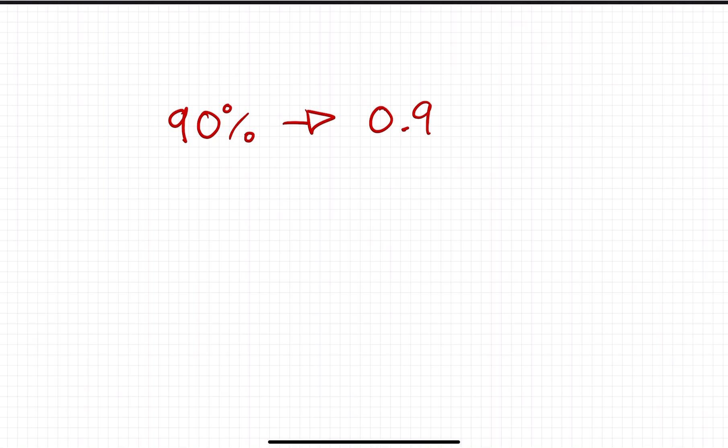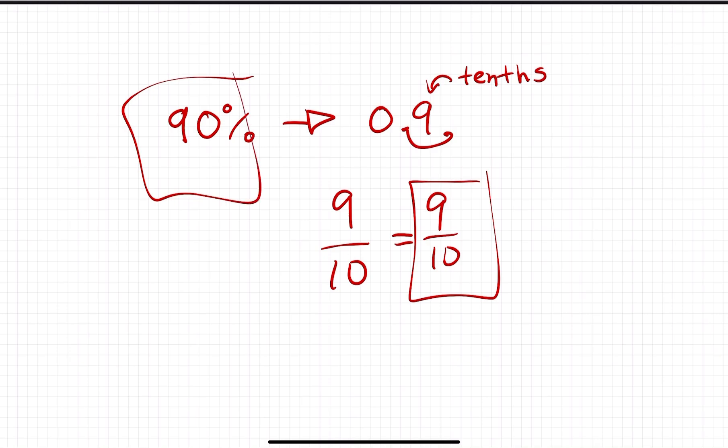90% written as a decimal is 0.9. To write it as a fraction, I see how many numbers I have after the decimal. Only one. This is the tenths place. So I take that 9 and put it over 10. This cannot be simplified further, so that's the most simple form. 90% is equivalent to 0.9, which is equivalent to 9 over 10.